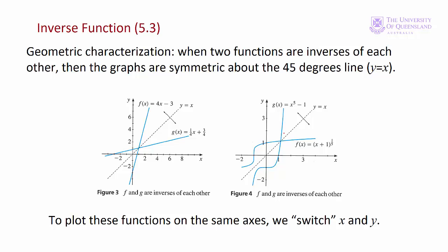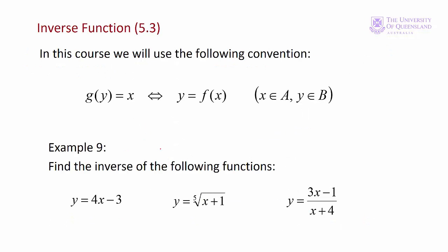Some of you might be familiar with the concept of switching x and y for inverse functions. This occurs when we want to plot the inverse function on the same axis as the original function. So here we have f of x equals 4x minus 3; the inverse function in terms of x is a quarter x plus three quarters. In these cases we see the symmetry about the y equals x line, or the 45-degree line. However, in economics we don't switch variables for inverse functions, as we'll see.